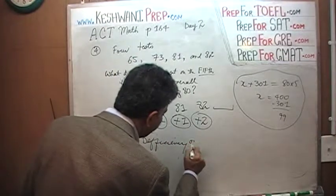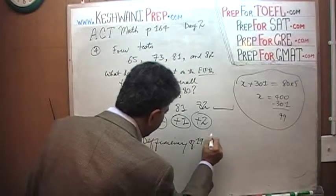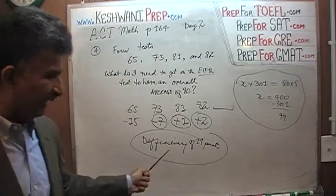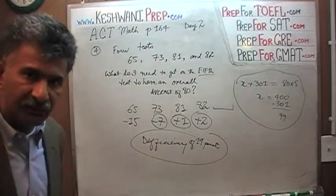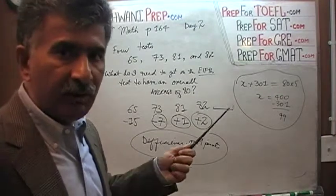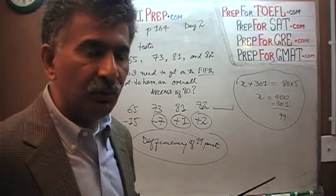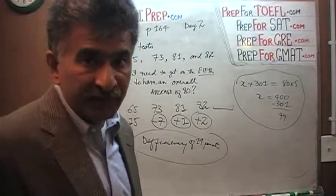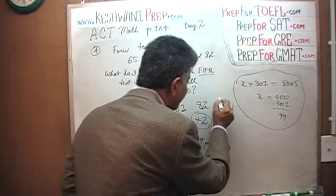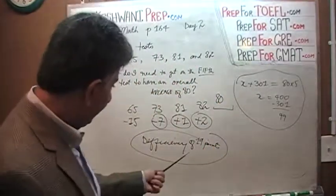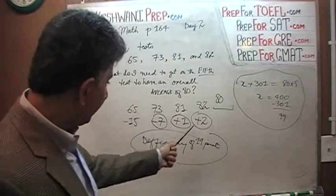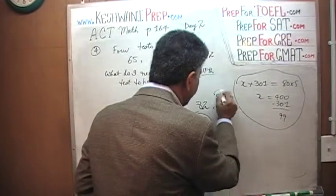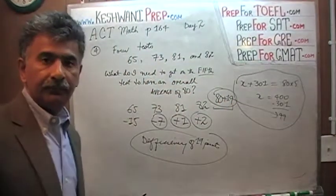I have a deficiency of 19 points. You have to make up those 19 points in the last exam if you want to have an overall average of 80. The last exam has to carry itself 80 points for itself, and it has to make up 19 more points because you were short 19 points in the first four exams. 80 plus 19 is your 99. Do you understand?